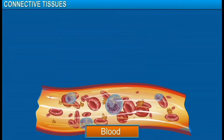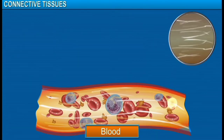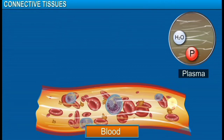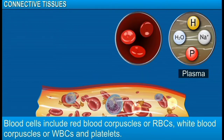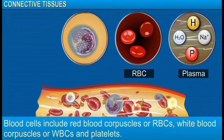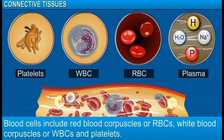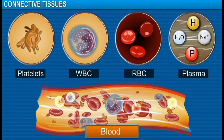Blood is a type of fluid connective tissue. Blood has a straw-coloured liquid part called plasma, which contains water, proteins, salts, and hormones. Blood cells suspended in the plasma include red blood corpuscles or RBCs, white blood corpuscles or WBCs, and platelets. Blood flows within blood vessels and transports gases, digested food, and hormones to different parts of the body.